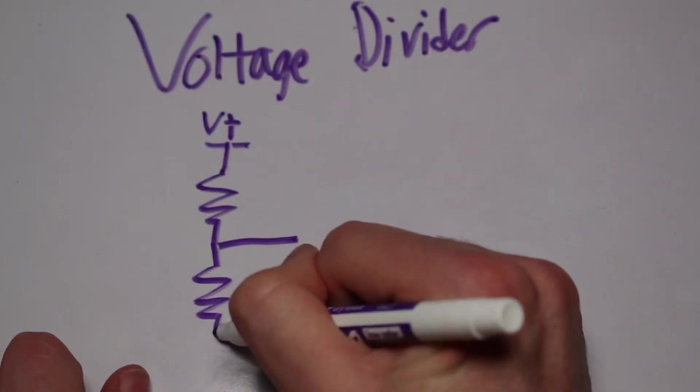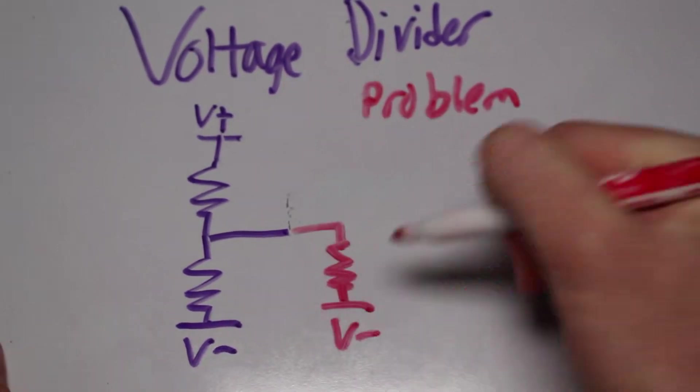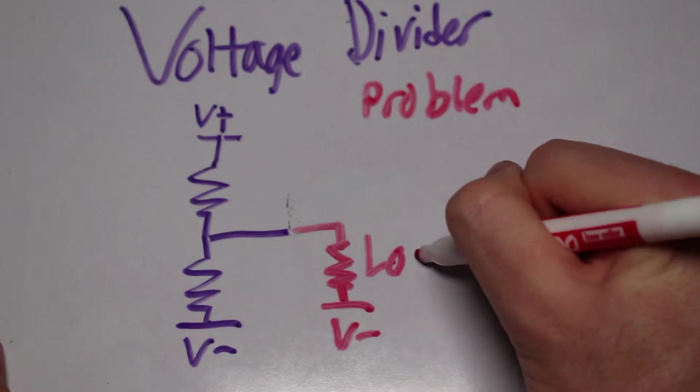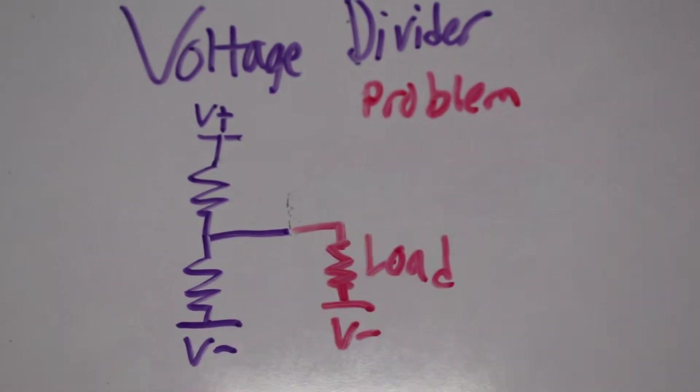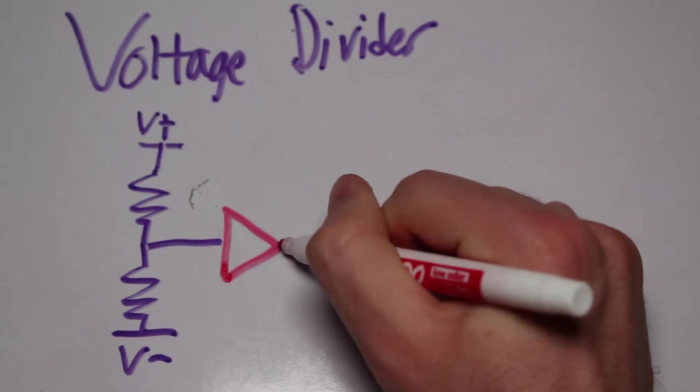And yes, this technically works. But a problem arises when we place a load onto the circuit because Ohm's law is modified. So to keep the voltage stable, we can use an output buffer.